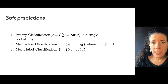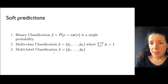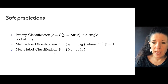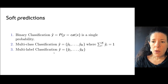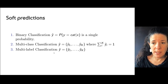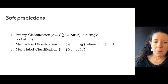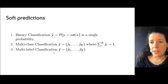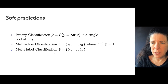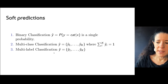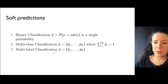In multi-class classification with k classes, we have k probabilities, and since we only have those k classes, we want all probabilities to sum to 1. In multi-label classification, we also have k probabilities, but these are the probability that each particular label is present in the image — so those probabilities do not sum to 1.